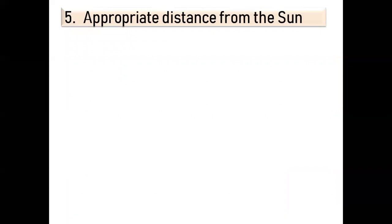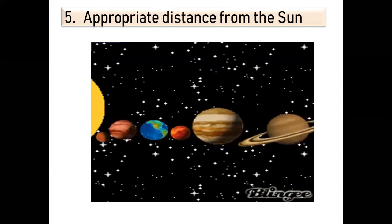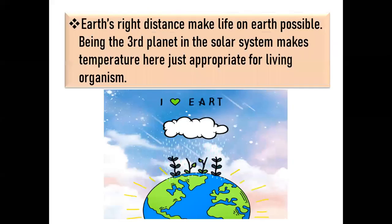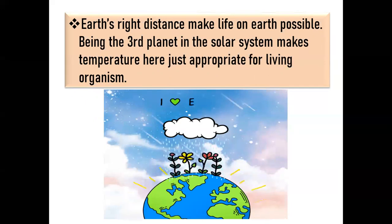Next is appropriate distance from the Sun. The Earth is 149.5 million kilometers away from the Sun. This right distance makes life on Earth possible — being the third planet in the solar system makes the temperature here just right for living organisms. With the right distance, the Sun warms our seas, steers our atmosphere, generates weather patterns, and gives energy to growing plants that provide food and oxygen for life on Earth.